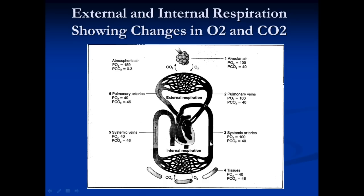As the blood enters the capillary bed, oxygen moves from an area of high concentration in the capillaries to an area of low concentration in the tissues. Because the tissues have much more CO2 than the capillary bed, CO2 moves the other way. The blood then moves back to the heart and is pumped back to the lungs, starting the whole cycle again.